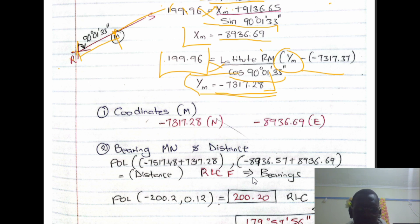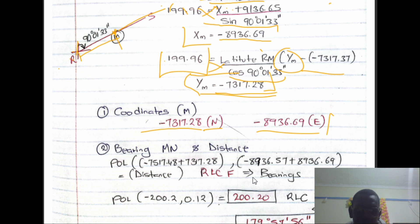There is a negative here because we moved from the positive end to the negative. My final coordinates are: northing equals negative seven thousand three hundred and seventeen point two nine, and easting equals eight thousand nine hundred and thirty-six point six nine.